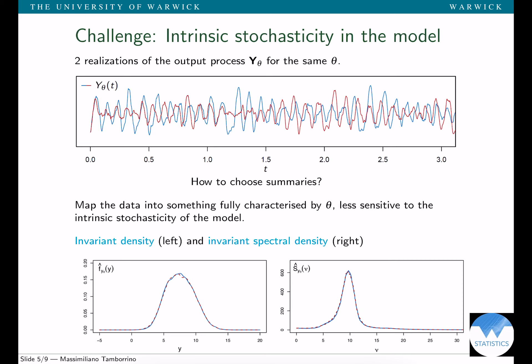The idea would be to map the raw data into something fully characterized by theta that is less sensitive to the stochasticity. We would like that two datasets are mapped to the same object if and only if the underlying parameter that's been used to generate the trajectory is the same. As you see in this illustration, this is what happens if we map the data from their raw realization to the invariant density and invariant spectral density. We benefit from the fact that the output process admits an invariant density, and we estimate both the invariant density and invariant spectral density via a periodogram smooth estimator. The two trajectories are mapped to the same object because they're generated from the same parameter theta.